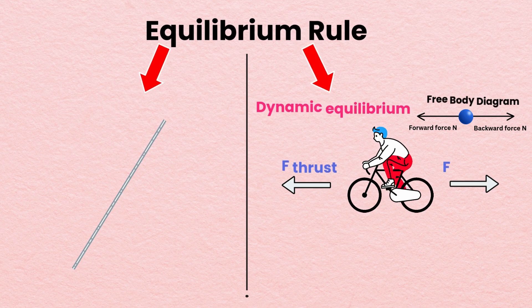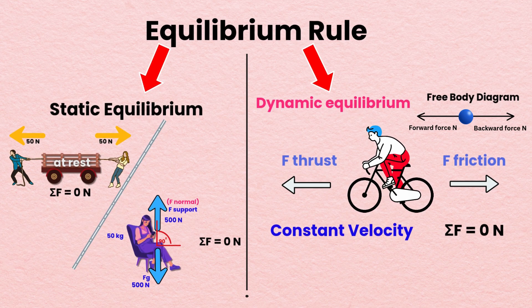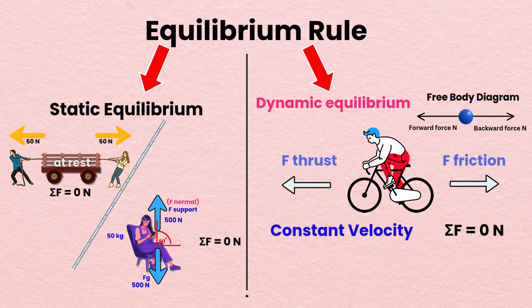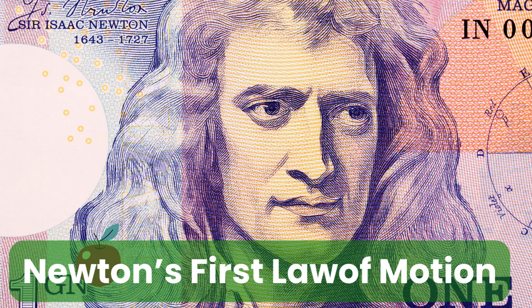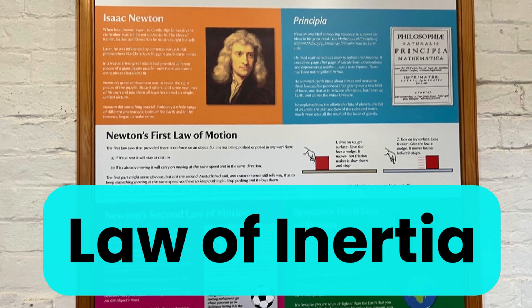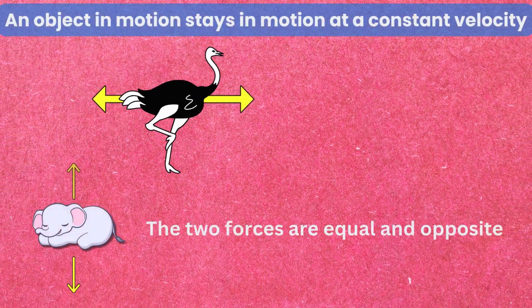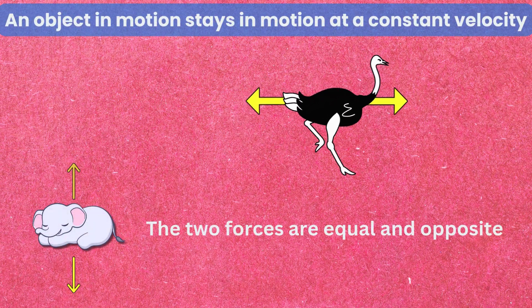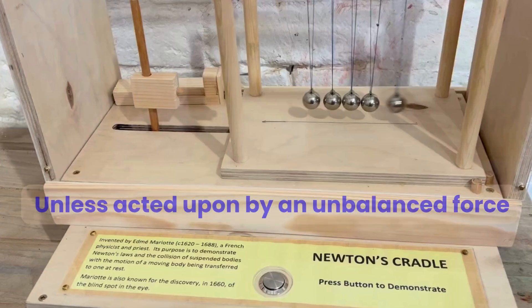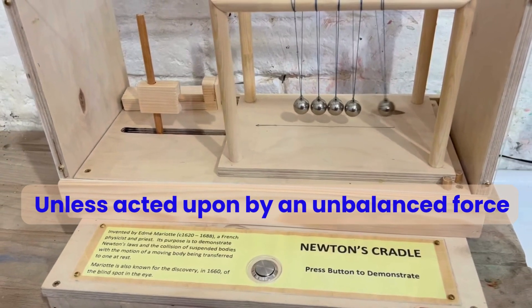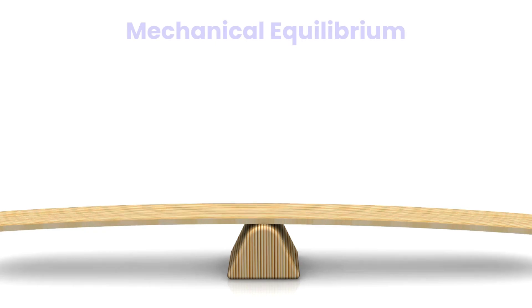Equilibrium Rule. The equilibrium rule is a fundamental concept in physics that describes the conditions under which an object remains at rest or in uniform motion. Newton's first law, or the law of inertia, states that an object at rest stays at rest and an object in motion stays in motion at a constant velocity unless acted upon by an unbalanced force.